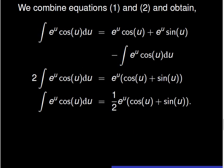We then combine equation 1 and equation 2, and we see that the integral of exponential of u times cosine of u du appears on both sides of the new equation. We move those terms to one side, and when we solve the resulting equation we find that the integral of exponential of u times cosine of u du is equal to one half times exponential of u times the sum of cosine and sine of u.